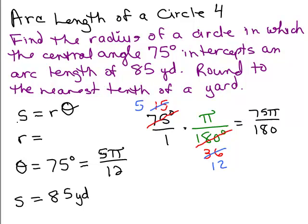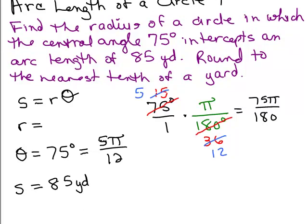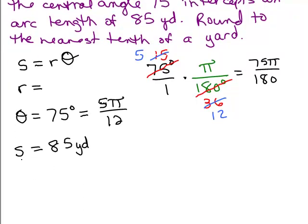So now we're going to take this formula, S equals R theta. And we know S, so I'm trying to find out the radius. So I'm going to write this as R theta equals S. That way, the variable I'm looking for will be on the left-hand side. So my theta is 5 pi over 12, so I could write 5 pi over 12 times R, and that's equal to my S, which is 85.